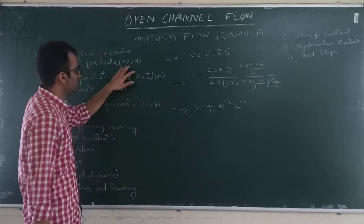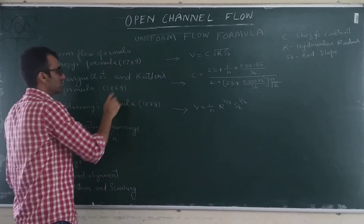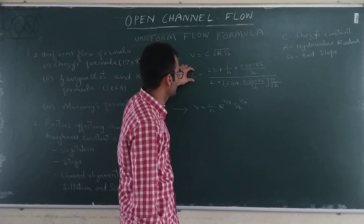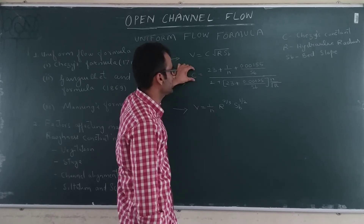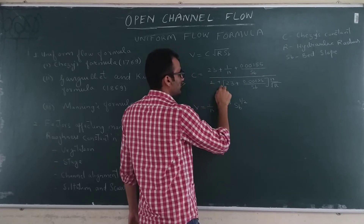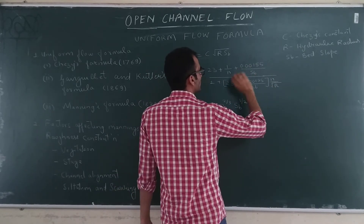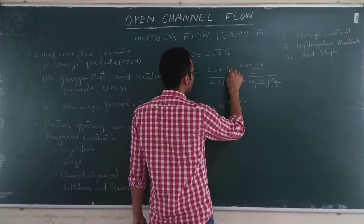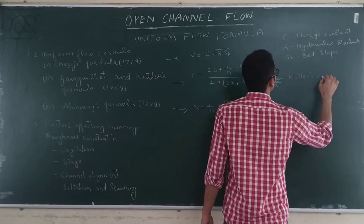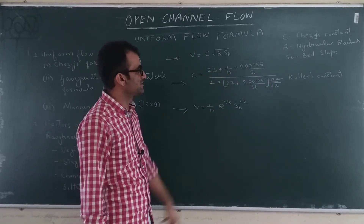After Chezy's formula was given in 1769 and used mostly for channel design, some improvements were made. Ganguillet and Kutter conducted a series of experiments in 1869 and came up with a more improved value of Chezy's constant: C = (23 + 1/n + 0.00155/Sb) / (1 + (23 + 0.00155/Sb)·n/√R), where n is Kutter's constant, which depends upon the roughness characteristics of the channel.